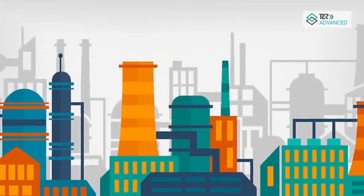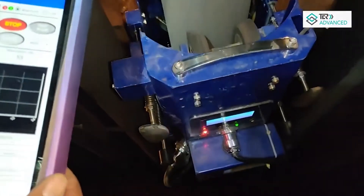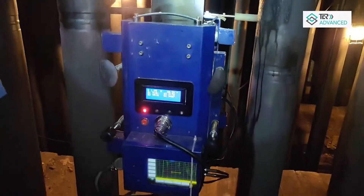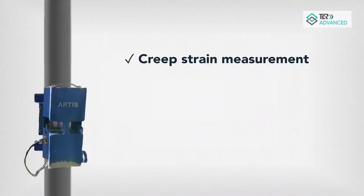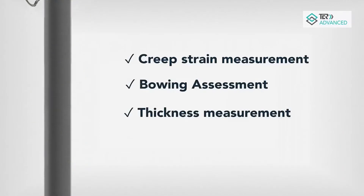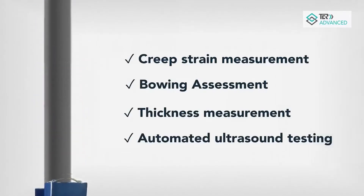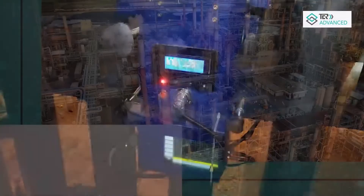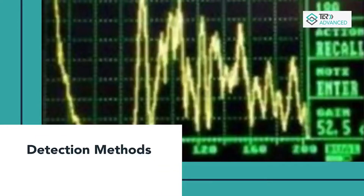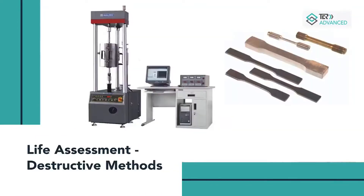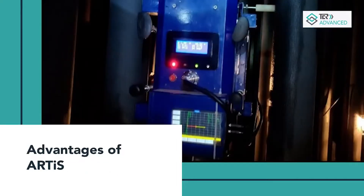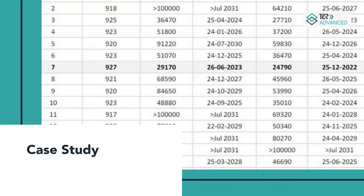PCR's revolutionary automatic robotic crawler RTS is an innovative aid for holistic tube inspection that includes automated system inspection like creep strain measurement, bowing assessment, thickness measurement, and automated ultrasound testing. In this series we will discuss primary reformer types of damages, detection methods, life assessment destructive method, life assessment NDT method, RTS advantages, and case study.